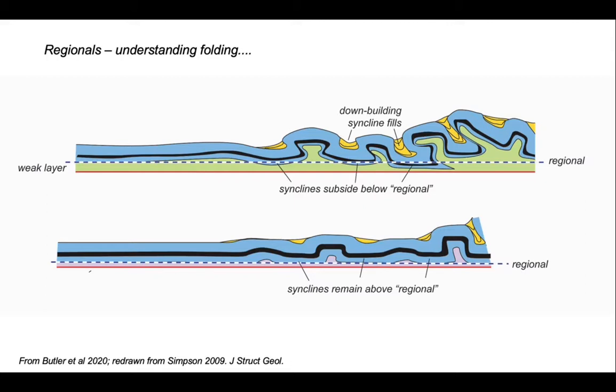As a consequence, the synforms have been able to accumulate synkinematic strata, creating these so-called down-building fills. But regionals have very rarely been applied to understand fold belts.